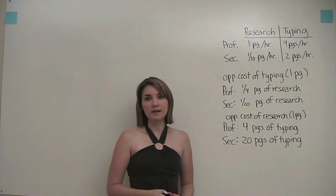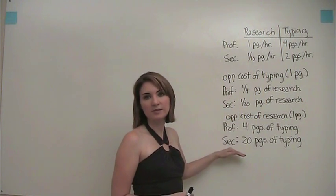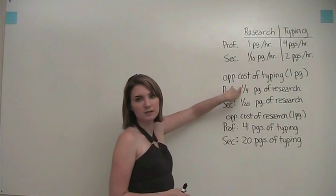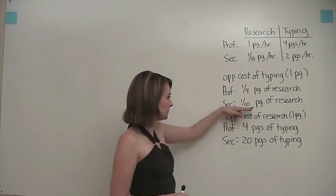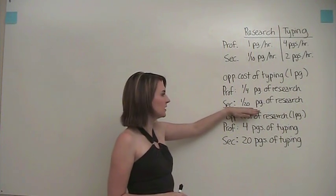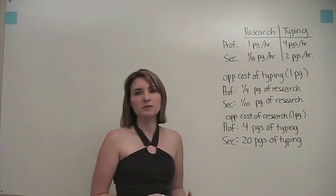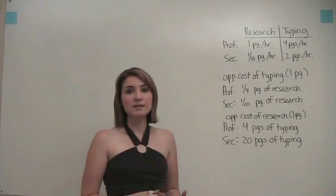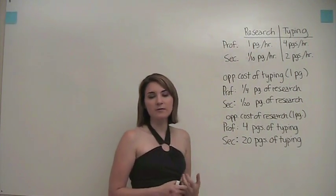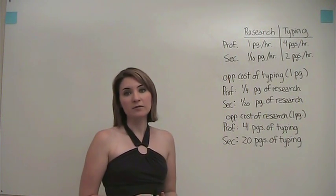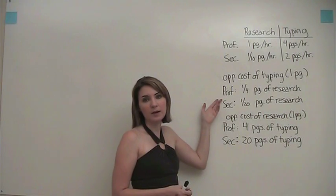There are two helpful things to note. First, there's a relationship between opportunity costs for each person: if the professor's opportunity cost of typing is one-fourth of a page of research, then the opportunity cost of research in terms of typing is just the reciprocal, which is four. Similarly, if the secretary's opportunity cost of typing in terms of research is one-twentieth, then the opportunity cost of research in terms of typing is the reciprocal, namely twenty. Second, unless both parties have exactly the same opportunity costs, one will always have a comparative advantage in one activity and the other will have a comparative advantage in the other. Here, the professor has a comparative advantage in research and the secretary has a comparative advantage in typing.